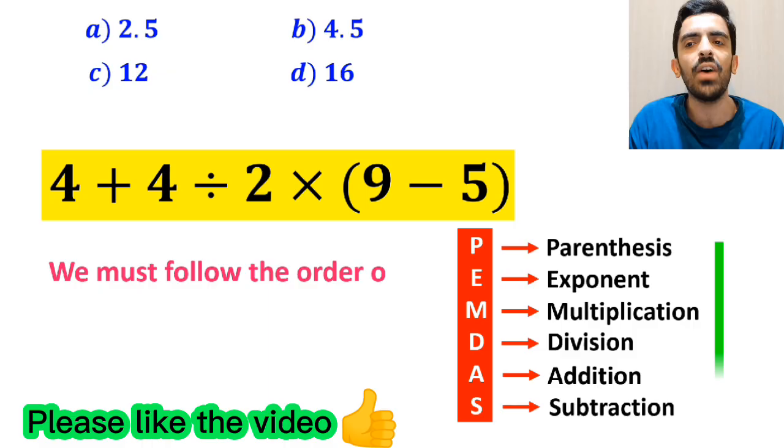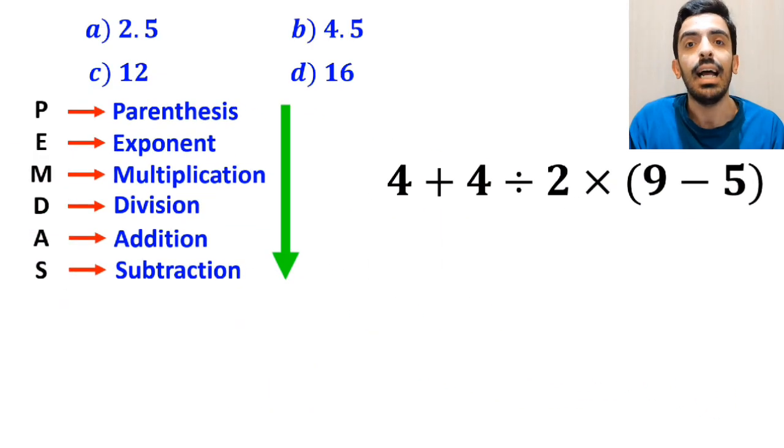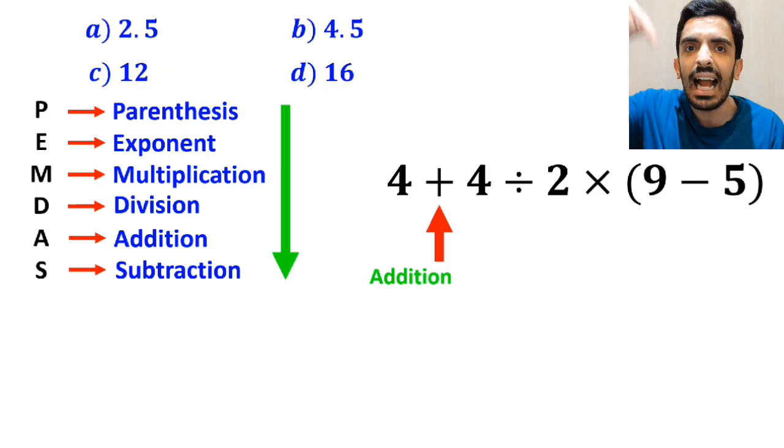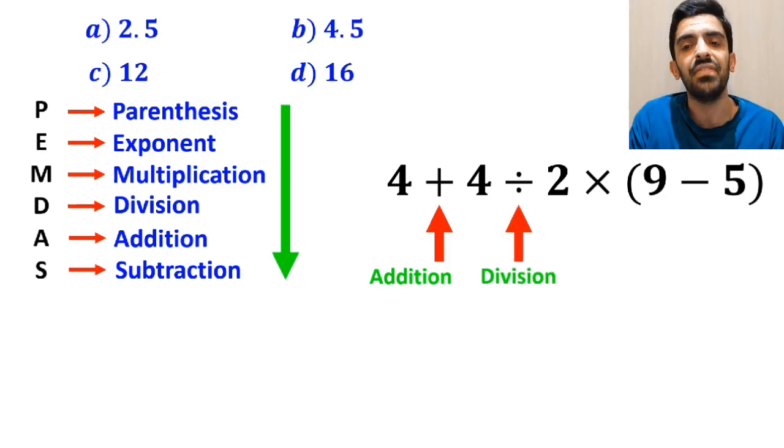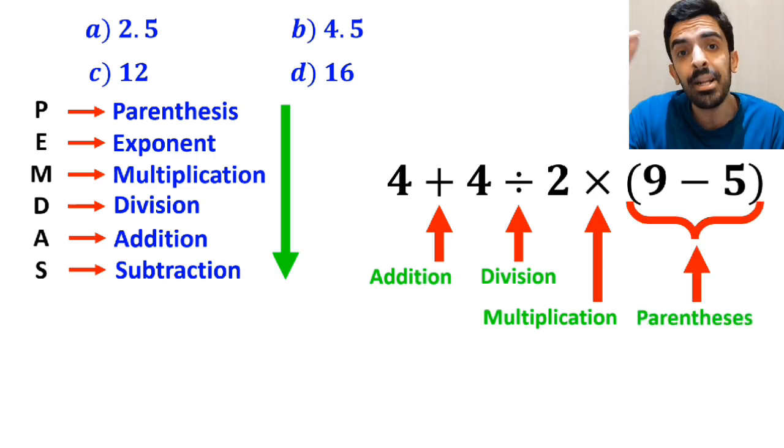We must follow the order of operations step by step from top to bottom. As you can see on the screen, in this expression, first we have an addition sign, then a division sign, followed by a multiplication, and finally, parenthesis.